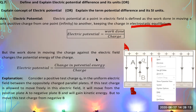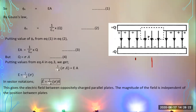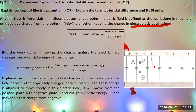The direction of electric lines of force is from the positive plate to the negative plate. Electric potential at a point in an electric field is defined as the work done in moving a unit positive charge from one point to another point, keeping the charge in electrostatic equilibrium. Mathematically, electric potential equals work done per unit charge.